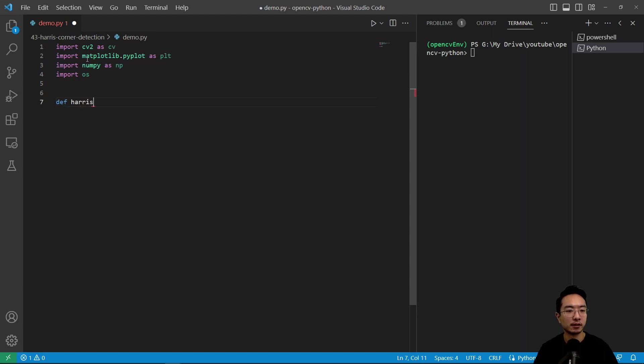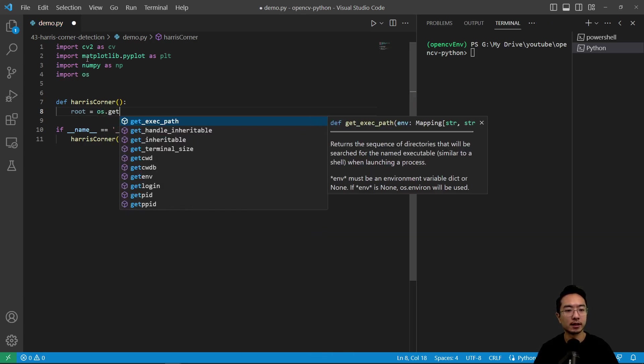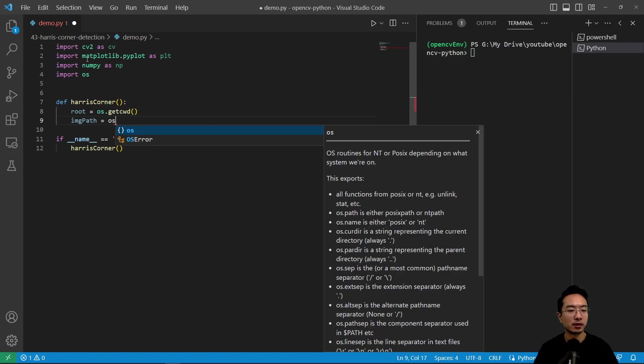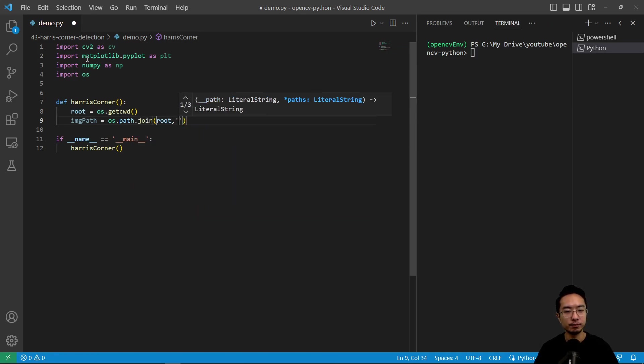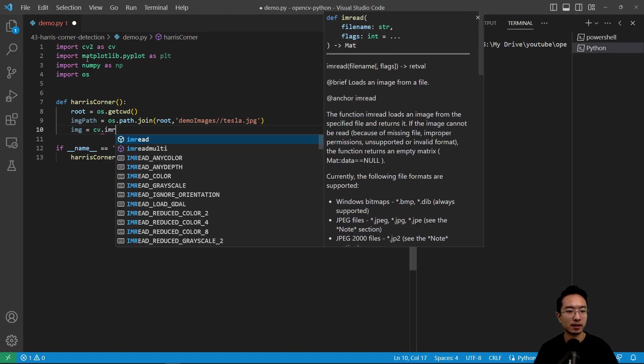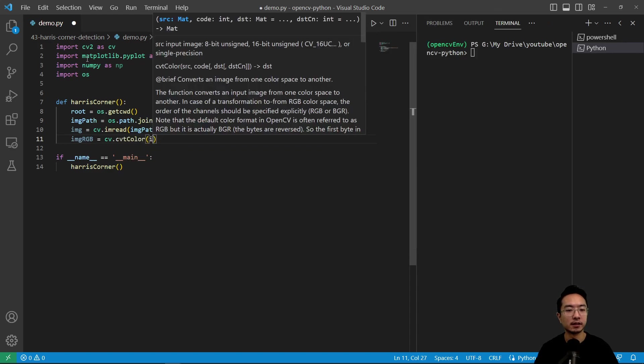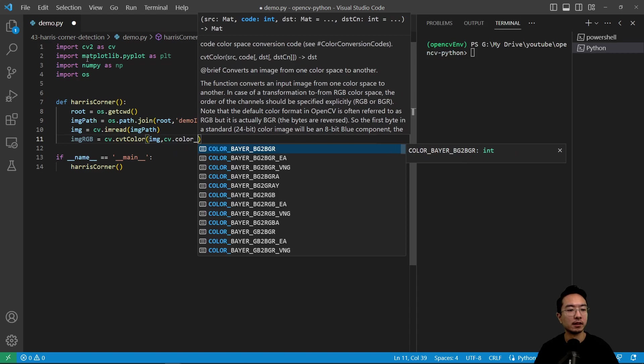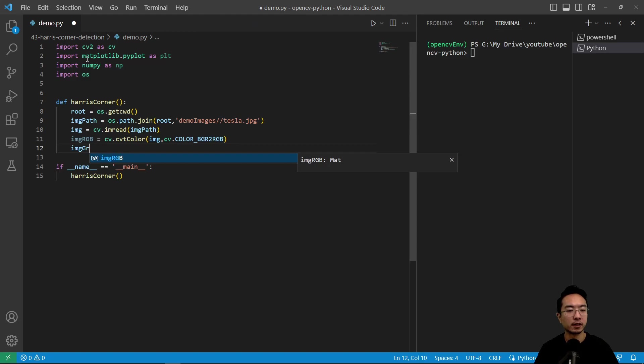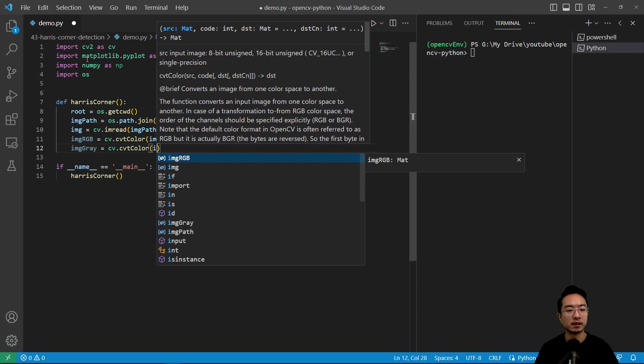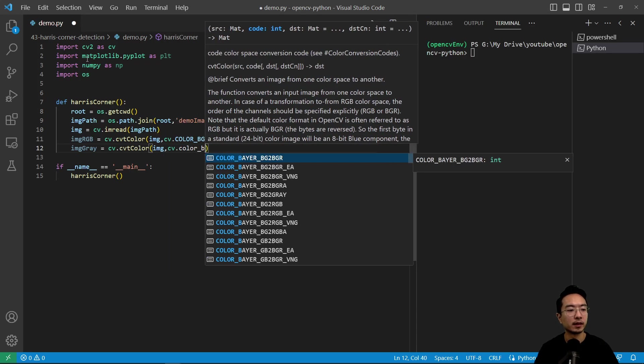So we're going to call our function Harris corner. And then we have our if name equals main here, and call our Harris corner. Then what this will allow us to do is we'll run our function inside here. We're going to have roots equals os.getcwd, and then image path equals os.path.join. We're going to pass in roots and then demo images tesla.jpeg. And we have our image equals cv.imread. We're going to pass in the image path, and we're going to have an RGB version cv.cvtColor image, and then we're going to have cv.COLOR_BGR2RGB. And then we have a gray version cv.cvtColor image, and then cv.COLOR_BGR2GRAY.